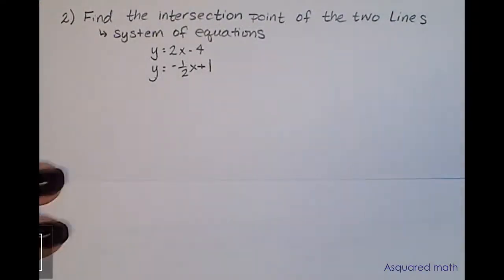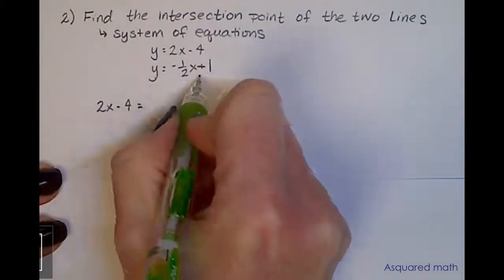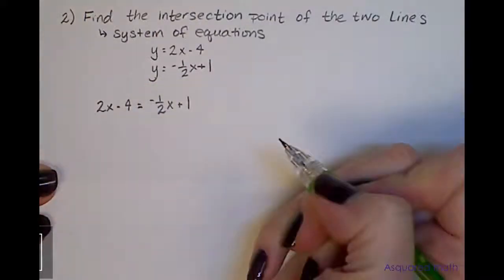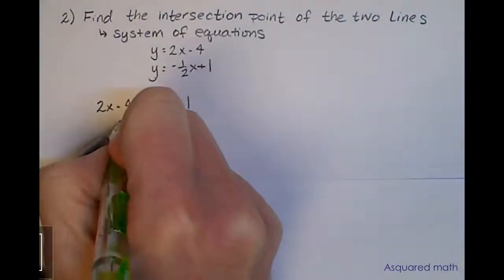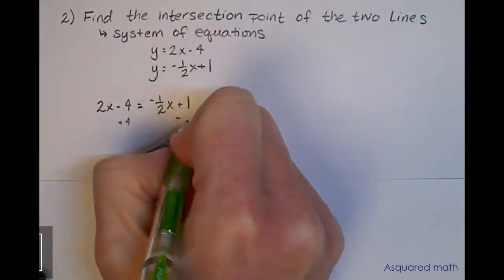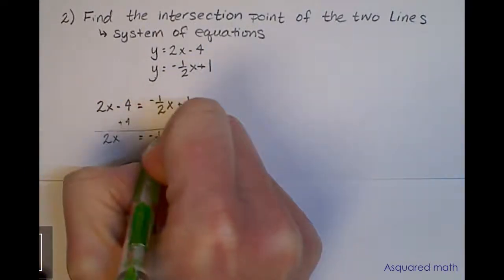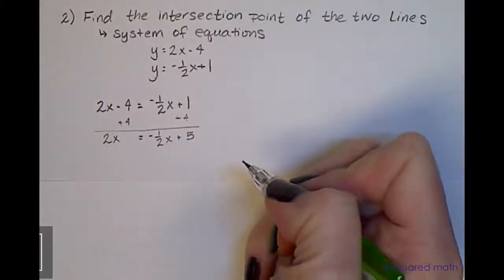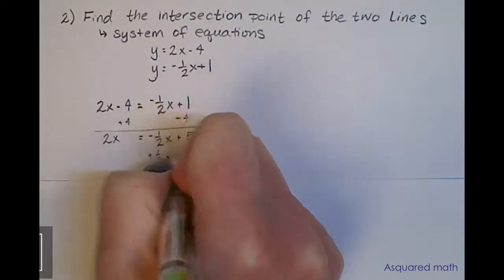Let's take 2x - 4 and set it equal to -1/2 x + 1. We're going to solve for x, so add 4 to both sides. We end up with 2x = -1/2 x + 5. I have to add one-half x to both sides.